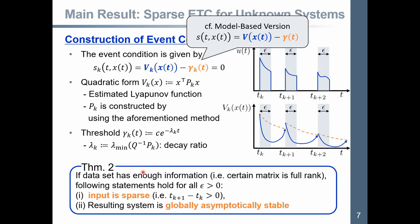Then, the following theorem is derived. If dataset has enough information, the following statement holds for all epsilon: input is sparse, and resulting system is globally asymptotically stable.